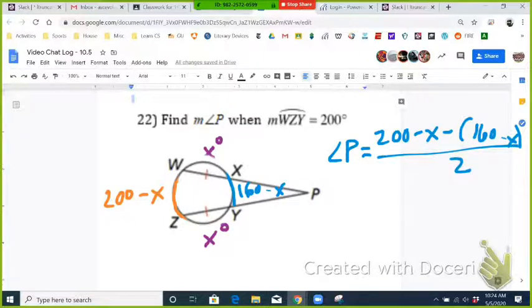Because when you have two secants intersecting outside the circle, it's going to equal half the difference of the two arcs that are intersected by those secants.